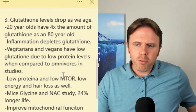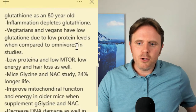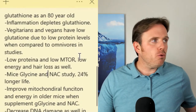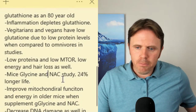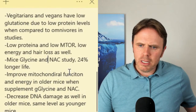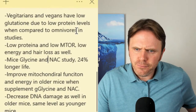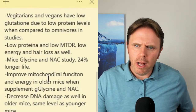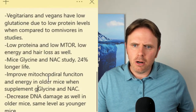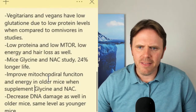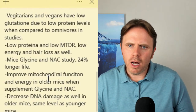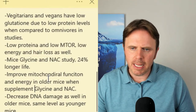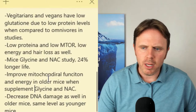24% longer life is really cool. You're going to see an increase in mitochondrial function — that means improved energy, improved muscle density, improved libido. Also, decreased DNA damage in the older mice — same level as the younger mice. The older mice that had the glycine and NAC had the same level of DNA damage as the younger mice. We decrease that DNA damage with good antioxidant support.